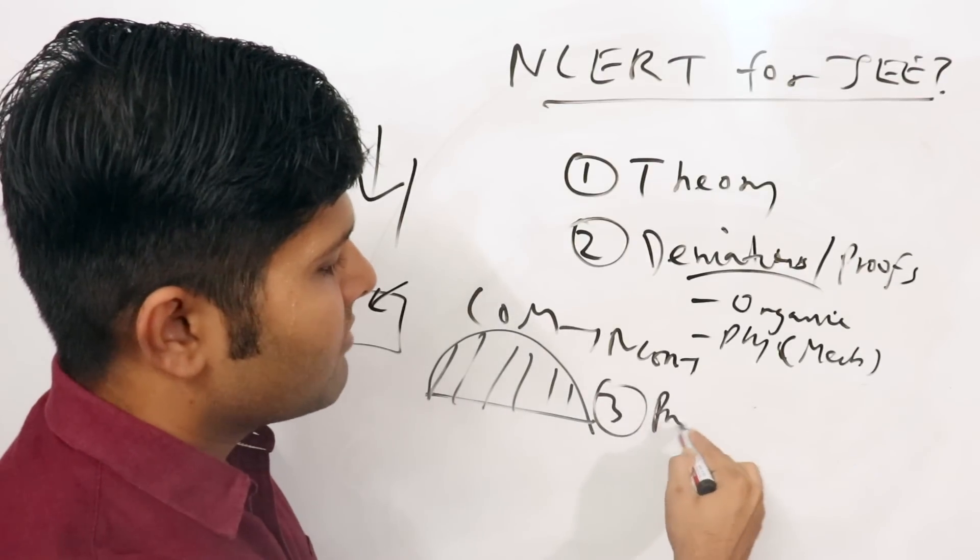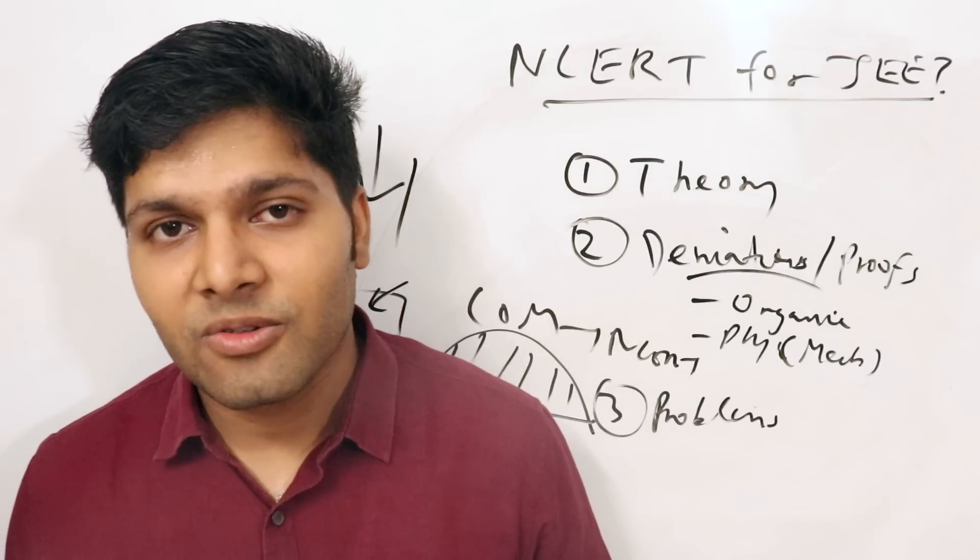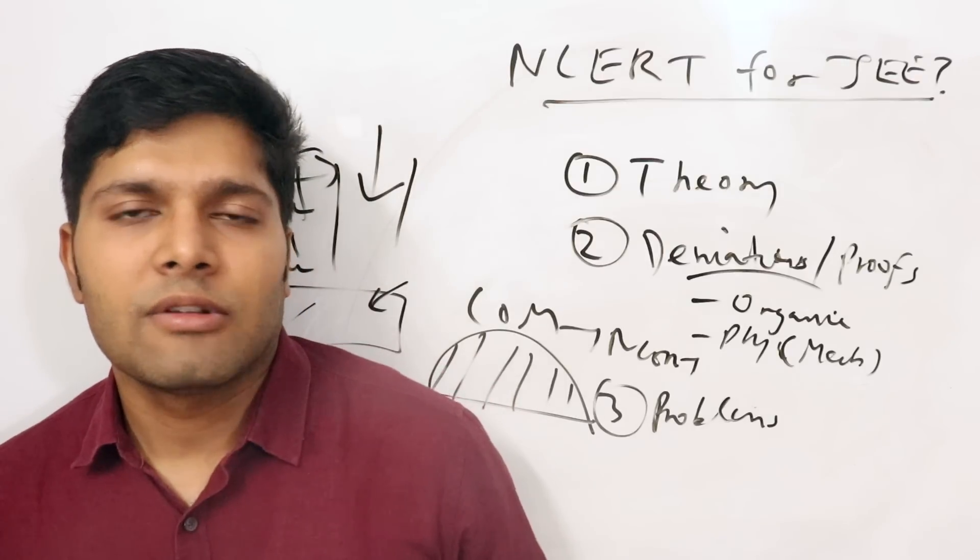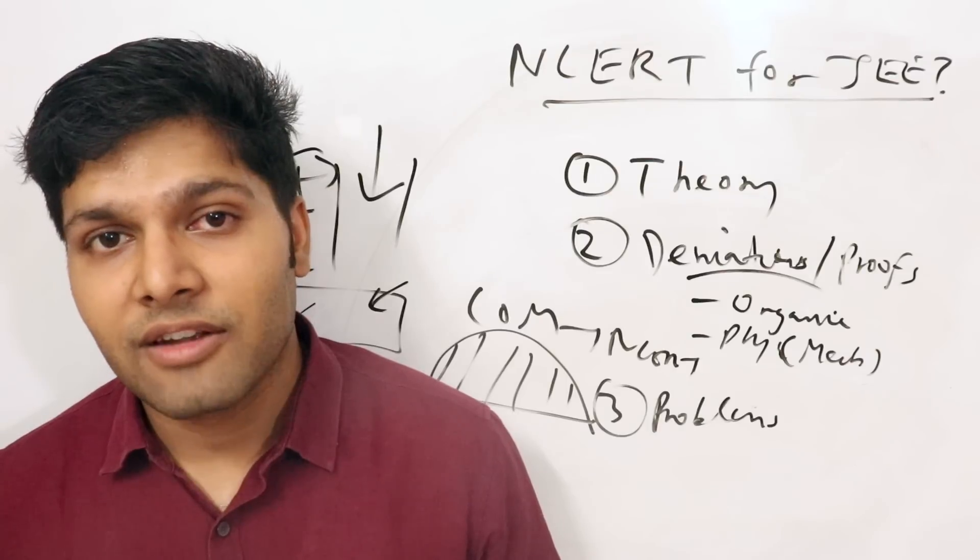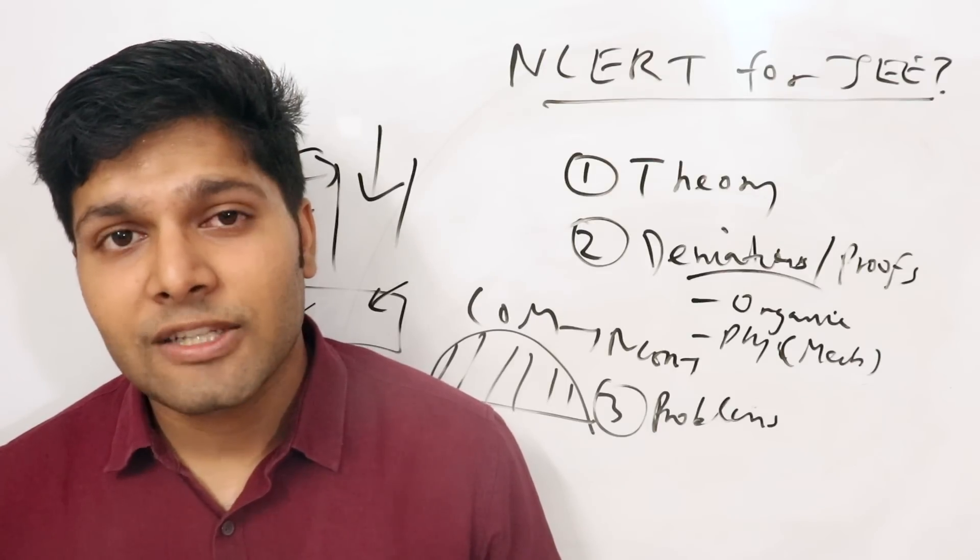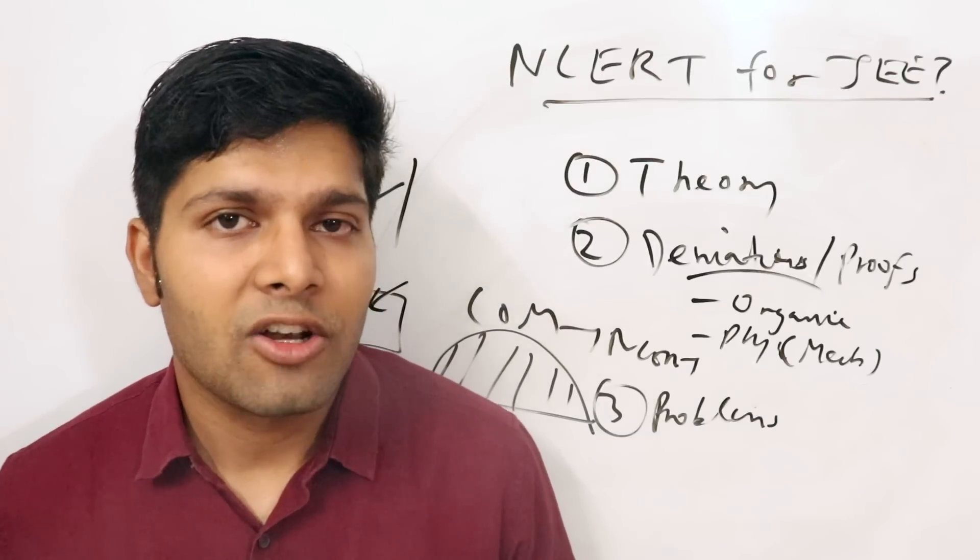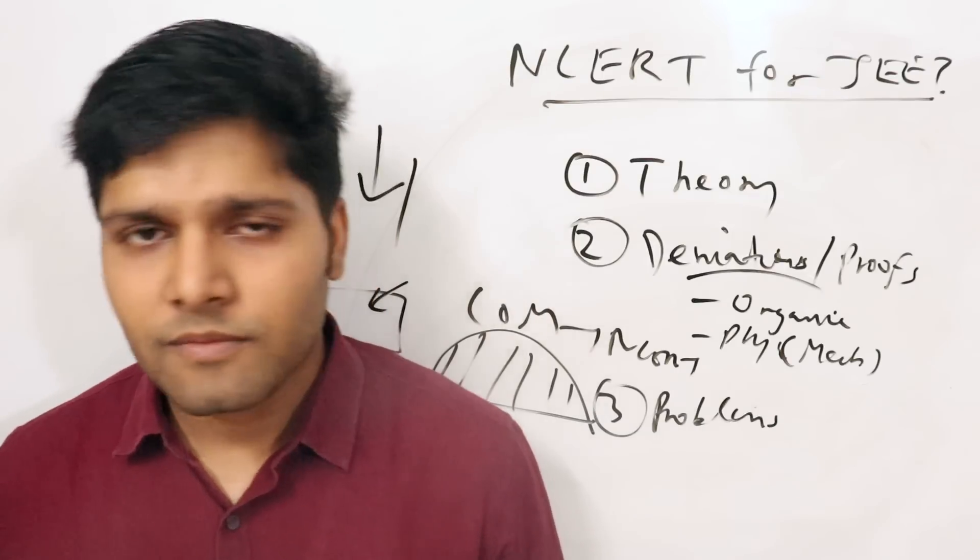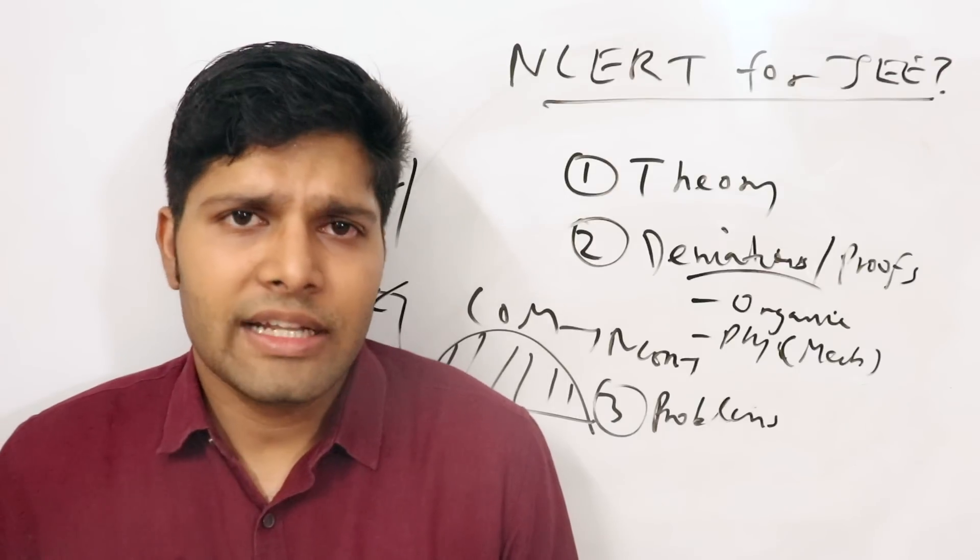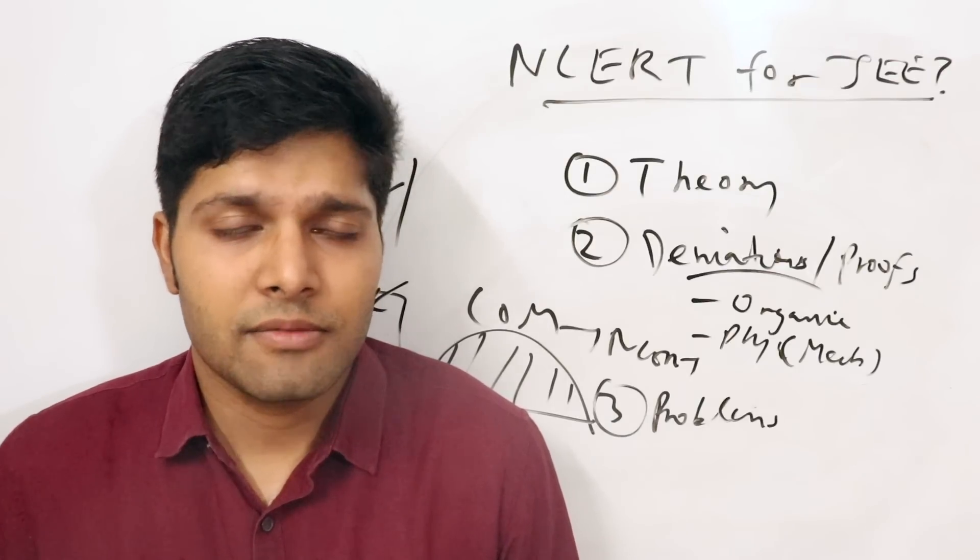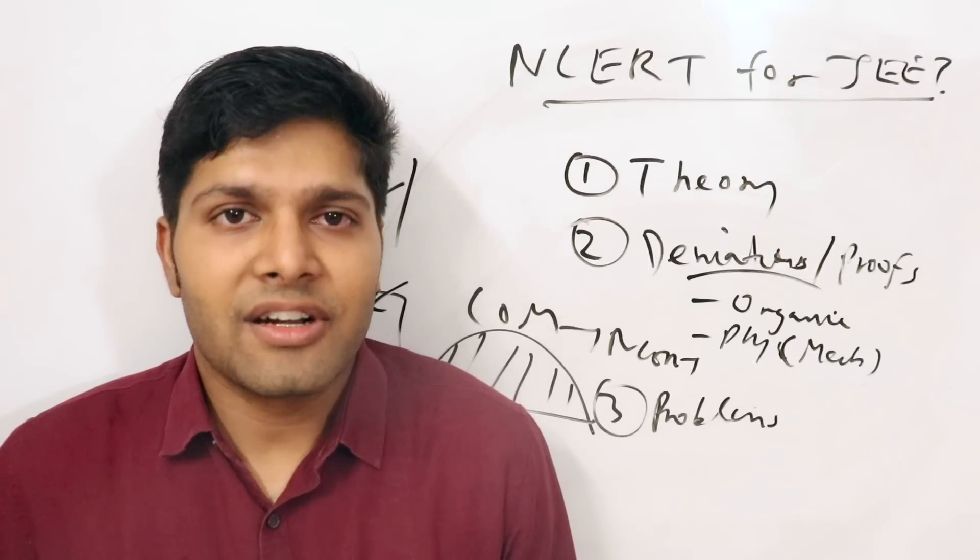The third portion where NCERT helps you is the problems. Now a lot of people will ignore NCERT problems thinking they are very simple, but this is not true. So I would suggest you to, if you go to the back exercises in physics NCERT, you will find some really good and high quality problems there. For example, in class 12 optics there are some really really good quality problems at the back of the chapter in geometrical optics. So those are some problems you can try. And in mathematics I think there are some miscellaneous problems which are a bit difficult than the normal NCERT questions. So those are also questions which you can try. In chemistry I'll be honest there are not many good questions, but I think the theoretical portion of chemistry makes up for it.